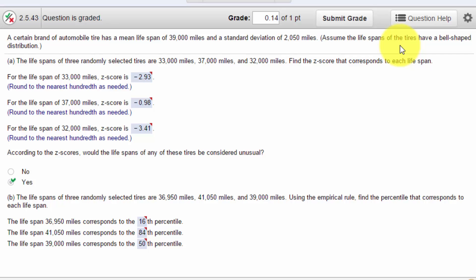Well, that last part means, of course, that we can assume this is a normal distribution. And because we're given information about the brand, this is really information about the population—the population mean of 39,000 miles and the population standard deviation of 2,050.